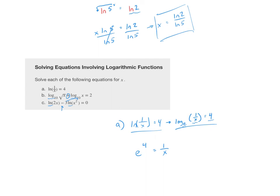Completing part a: we have e^4 = 1/x. There's an x in the denominator, so multiply both sides by x: x · e^4 = 1. Then divide both sides by e^4: x = 1 / e^4. That is our solution.